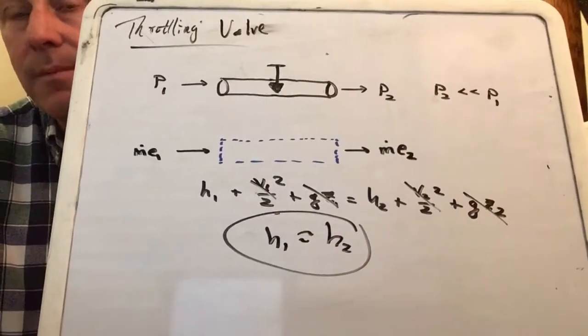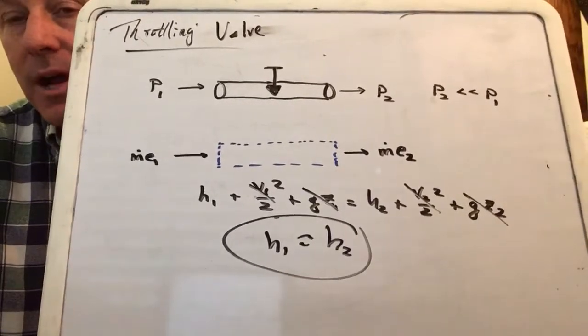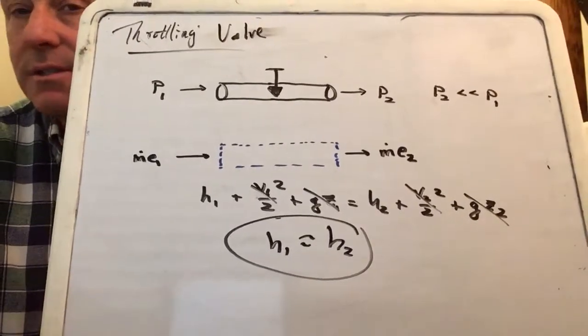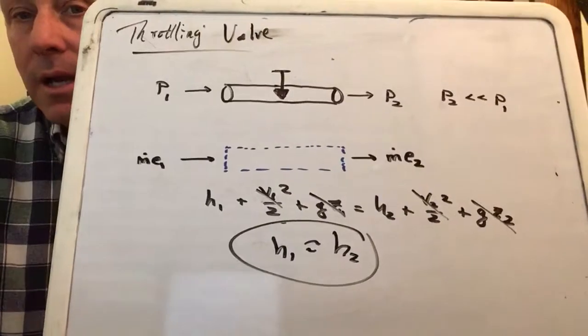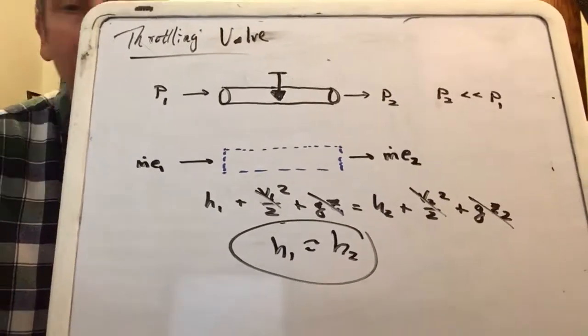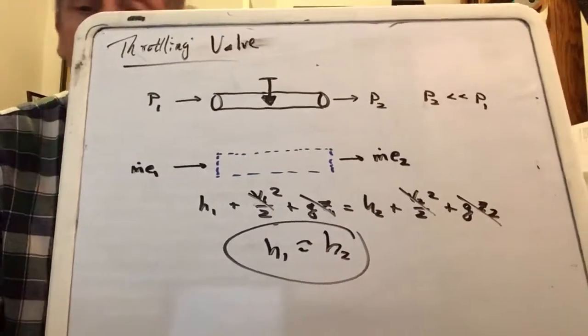That is your throttling valve equation. Of all the equations we've come up with working in chapter five with steady flow devices, it's the simplest one. Enthalpy in equals enthalpy out.